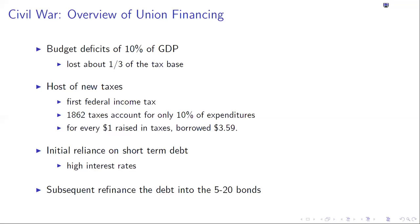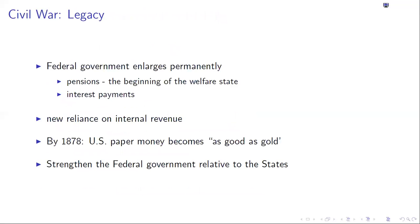When we last talked two weeks ago, we discussed the state debt crisis and the run-up to the Civil War. Budget deficits are going to jump to 10% of GDP. The Union is going to lose about a third of its tax base as 11 out of 34 states break away. There will be a host of new taxes, and initially a reliance on short-term debt at relatively high interest rates, later refinanced into bonds called the 5-20s.